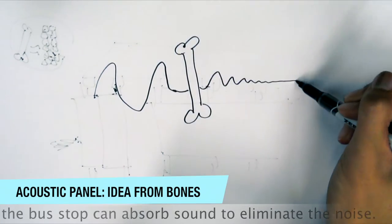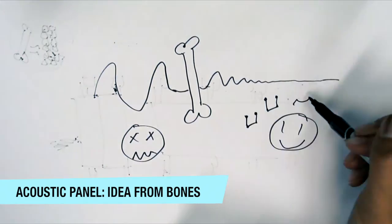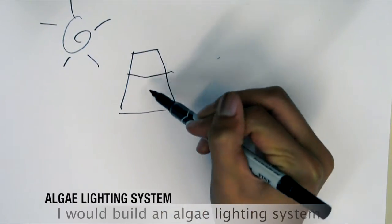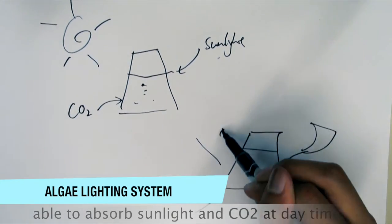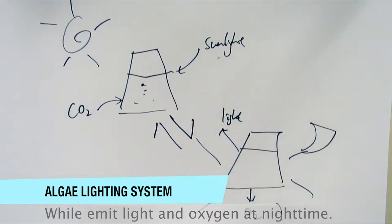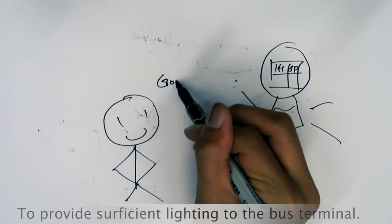I would build an algae lighting system that contains algae able to absorb sunlight and carbon dioxide at daytime while emitting light and oxygen at night time to provide sufficient lighting to the bus terminal.